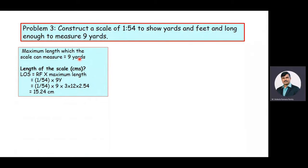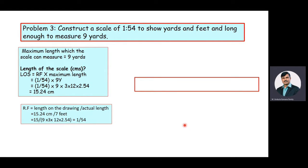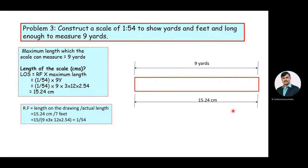The maximum length which the scale can measure is 9 yards, and the length of the scale value is calculated as 15.24 centimeters. As RF equals length on the drawing by actual length, here 15.24 centimeters divided by 9 yards gives RF = 1 by 54. For drawing purposes, we take the scale length as 15.24 centimeters. Since the 9 yards are the main units, we need to divide this total length into 9 equal parts.